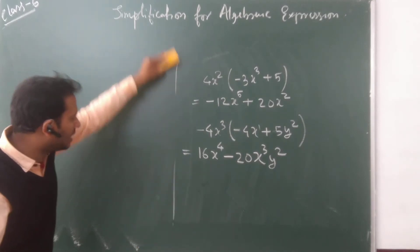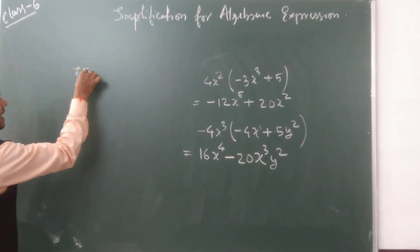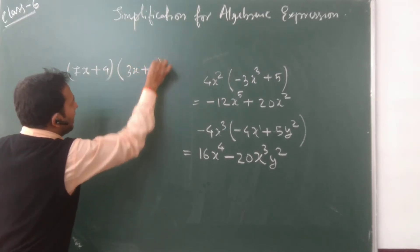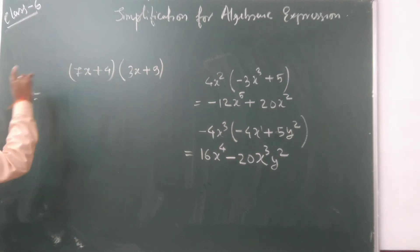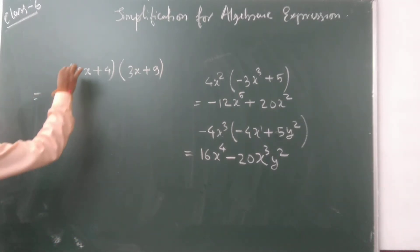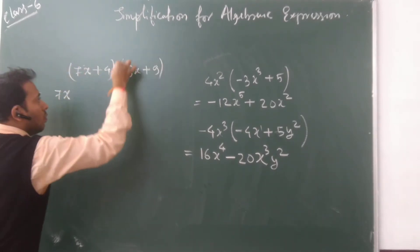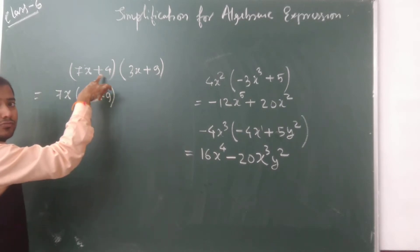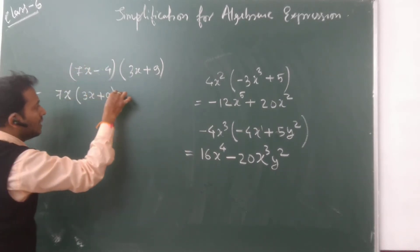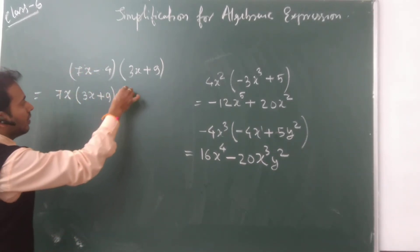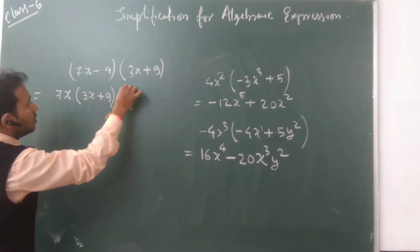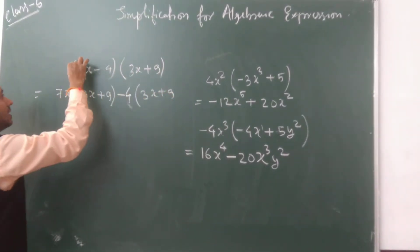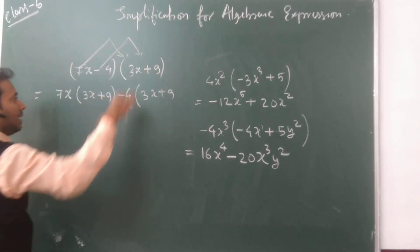Let's take a more standard problem: 7x + 4 multiplied by 3x + 9. We can also consider it as 7x + (minus 4) times 3x + 9. First, 7x multiplies the whole second bracket — that is 3x + 9. Then minus 4 multiplies the whole second bracket — that is 3x + 9 again. So 7x multiplies both terms, and minus 4 multiplies both terms.